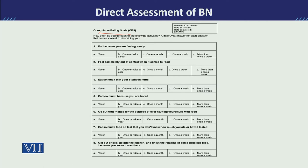The Compulsive Eating Scale is a small scale — it is an eight-item scale. It measures compulsive eating behavior. For example, one item asks: do you eat because you are feeling lonely? The scale is designed to find out when the client feels a need to eat.